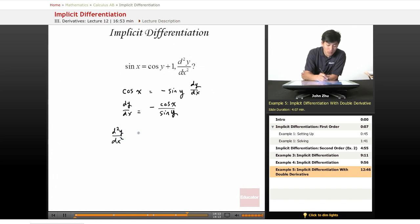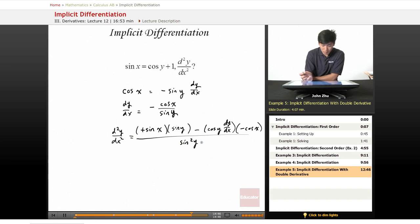d²y/dx² equals, well, derivative of the top term is negative sine, so negative negative is a positive, so positive sine of x times the bottom term minus derivative of the bottom term, which is cosine of y dy/dx times the top term, which is negative cosine of x, all over the bottom term squared.